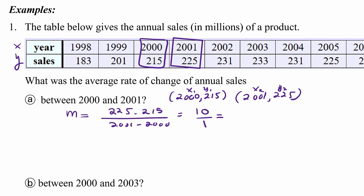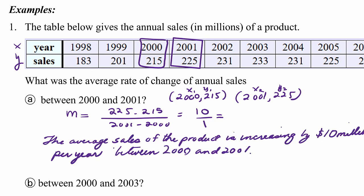And so our average rate of change value is coming out to be 10, but what does it represent in the context of this word problem? Well, that tells us that the annual sales of this product is increasing by $10 million per year during this interval. I'm going to write that down. The average sales of the product is increasing by $10 million per year between 2000 and 2001.